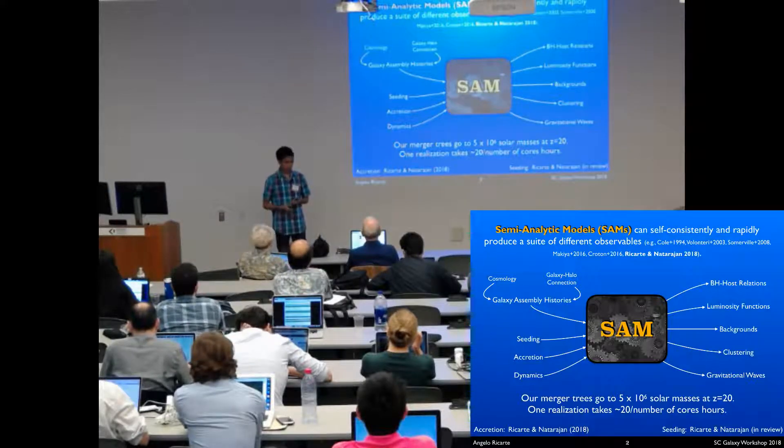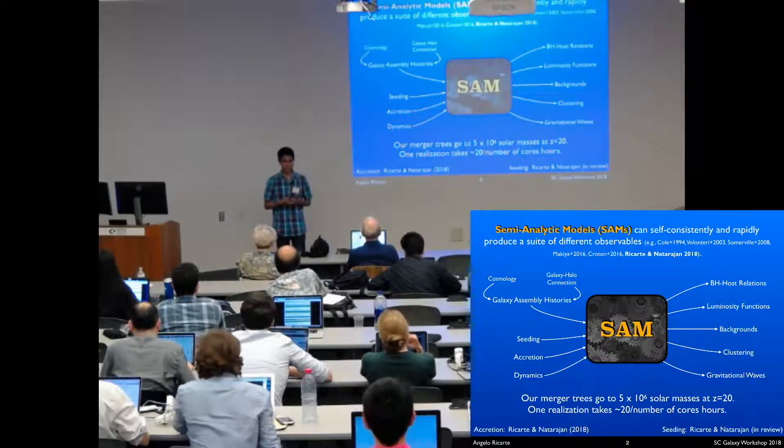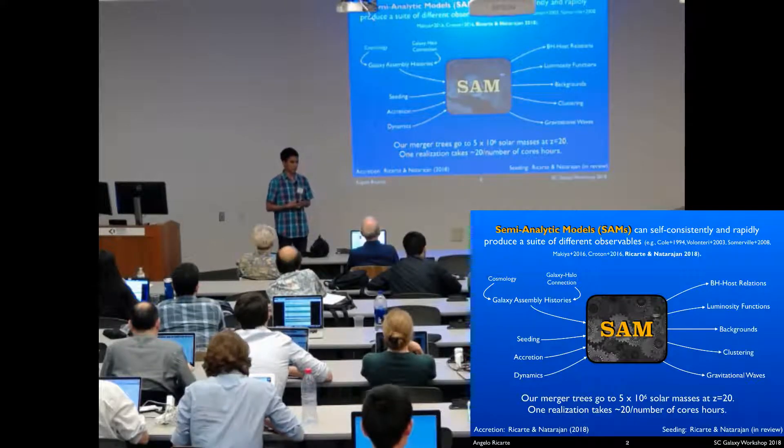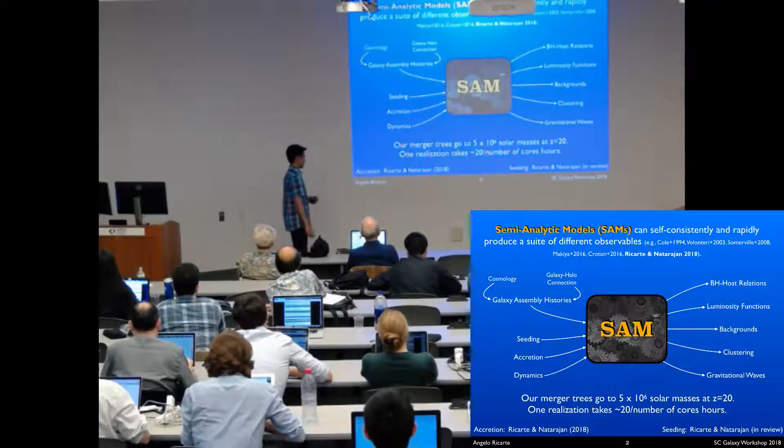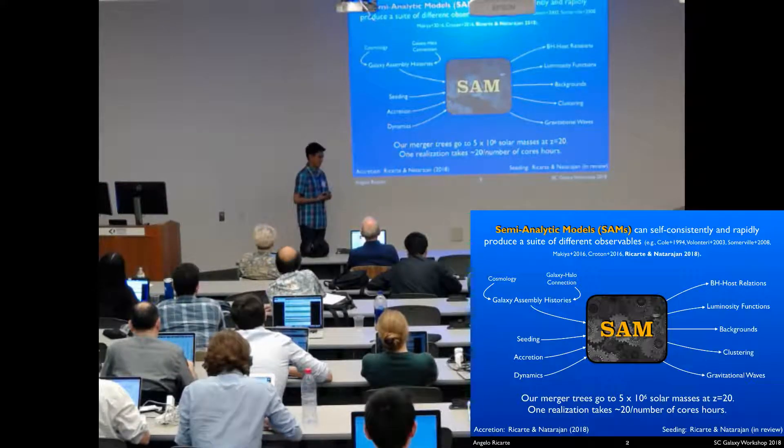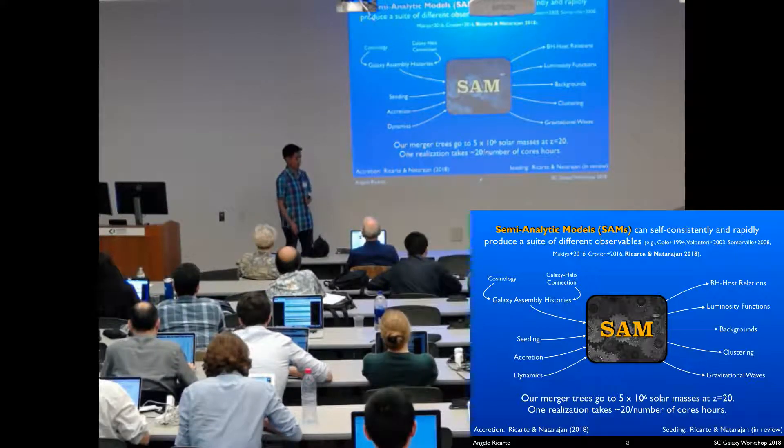The downside of doing merger trees this way is there's no direct spatial information. On the other hand, we're able to rapidly probe a large number of recipes and different parameters.